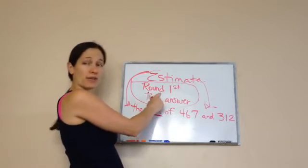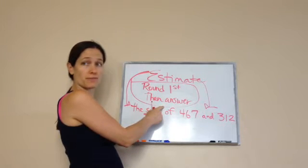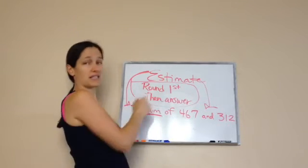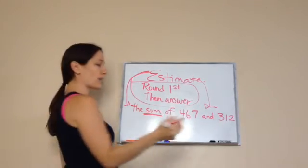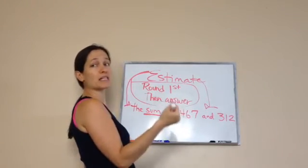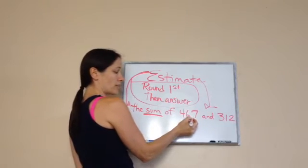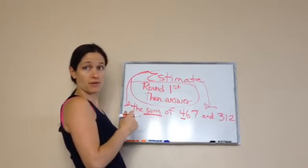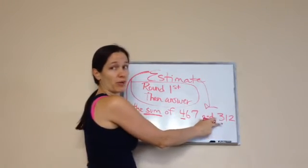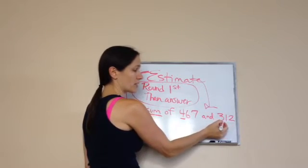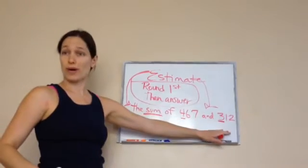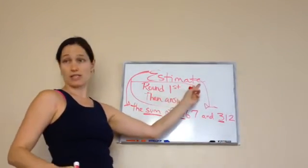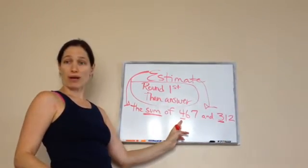But am I supposed to answer first and then round it or round it and then answer it? Then I'm estimating because I'm rounding. When they ask you to round, here's what you always do. What is my greatest place value? Ones, tens, hundreds. Hundreds. What is my greatest place value here? Ones, tens, hundreds. So, they're wanting me to round these numbers to the greatest place value. That's what estimation is.